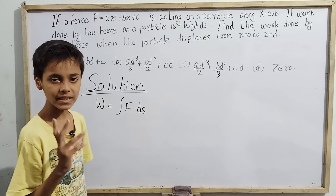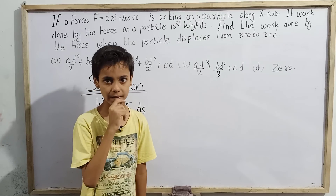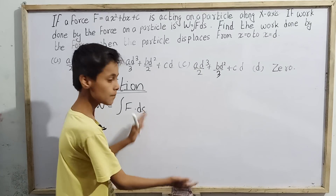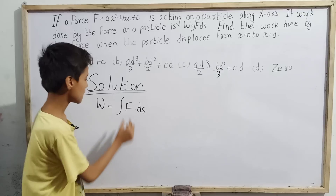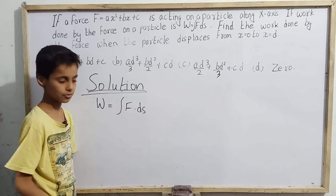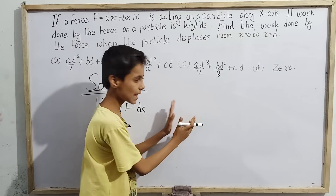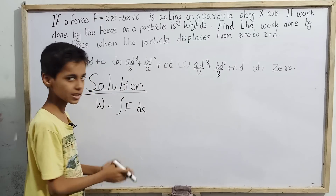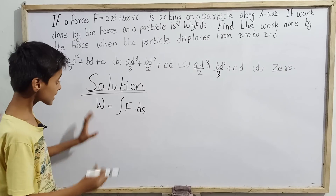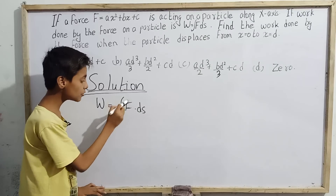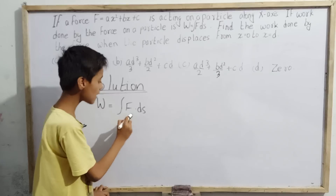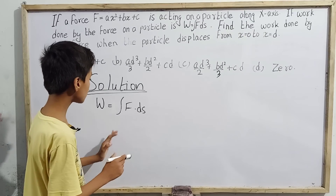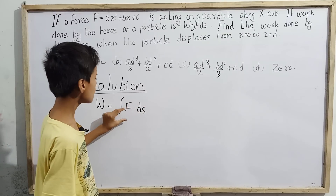There are two ways to find work. The first method is: if we have both force and displacement as numerical values, multiply them and find the dot product. The second method is to integrate the function F with respect to ds. Here we will use the second method — integrating F with respect to ds.